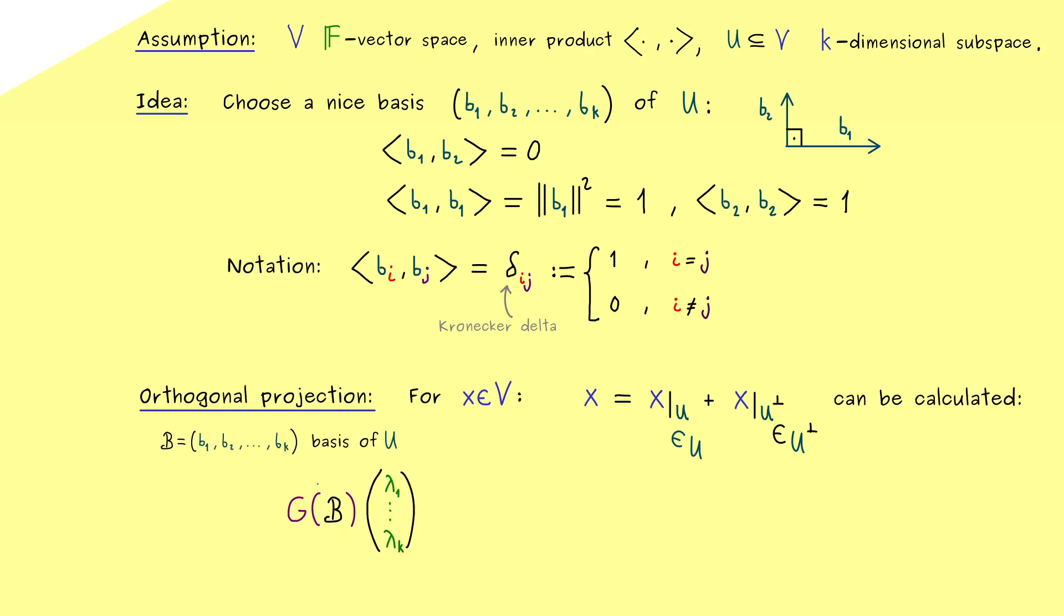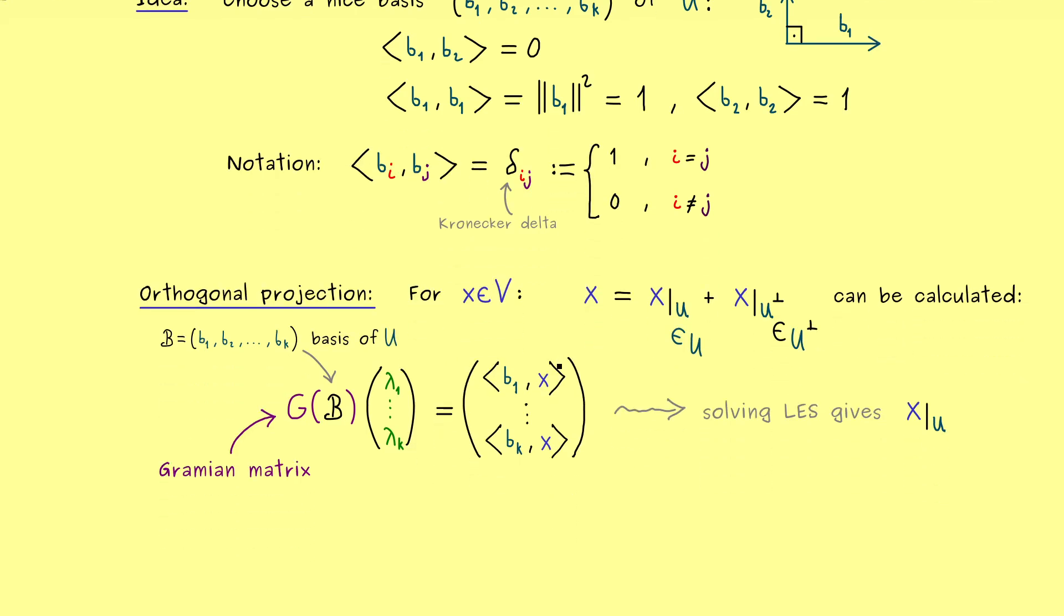And we write G(b), because the Gramian matrix is always related to a chosen basis of U. So there you see, the choice of a basis comes into the calculation. Indeed we also have it on the right hand side here, because we calculate inner products with the basis elements and x. However, the whole thing is not a big problem, because just inverting the Gramian matrix solves the whole system. Or more efficiently, we can bring the system into a row echelon form and find the unique solution. Therefore, this whole procedure is very quick, if the Gramian matrix is in a nice form.